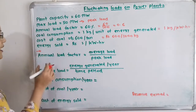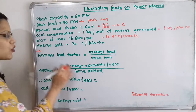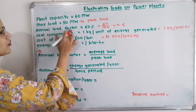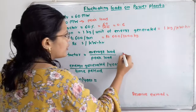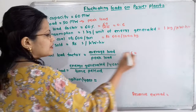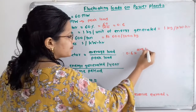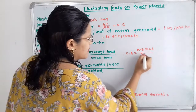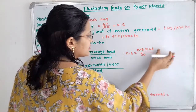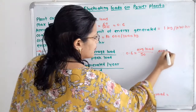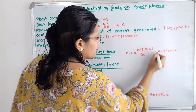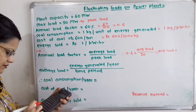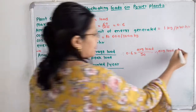From the given data, annual load factor is nothing but average load divided by peak load. So 0.6 equals average load divided by peak load of 50 megawatt. Therefore, average load is equal to 50 multiplied by 0.6, which is 30 megawatt.